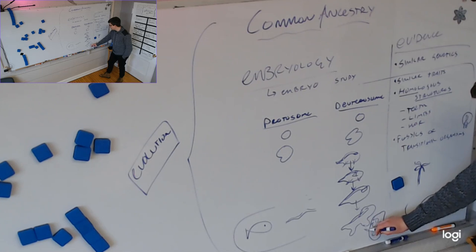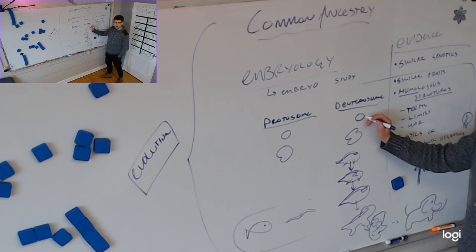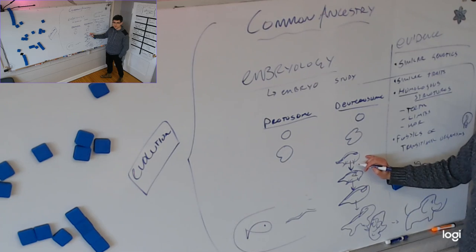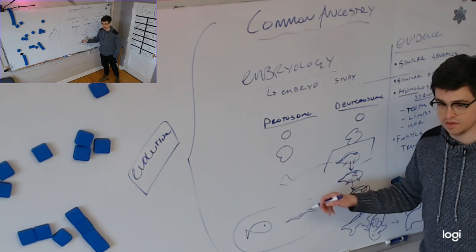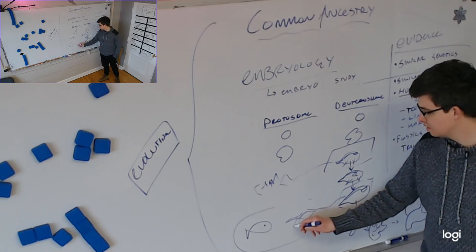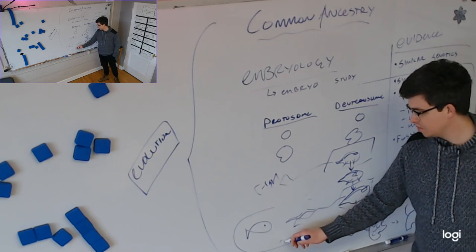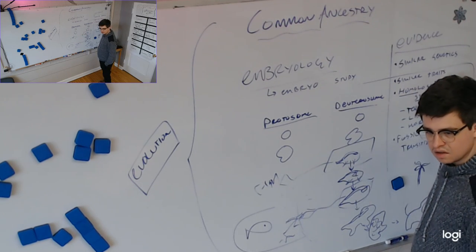And one way that we use this as evidence for common ancestry is that all embryos go through this. It's just that some of them stop here and then that's born and it's a fish. Which, this one's born and it's a mammal thing. But you see kind of how this reflects the evolutionary trend?